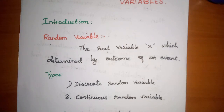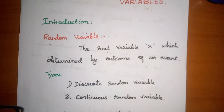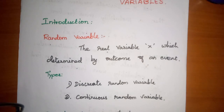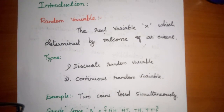There are two types of random variables: discrete random variables and continuous random variables. As the name implies, a discrete random variable takes particular separate values — for example, 1, 2, 3. A continuous random variable does not take discrete values but can take values continuously over an interval or range.